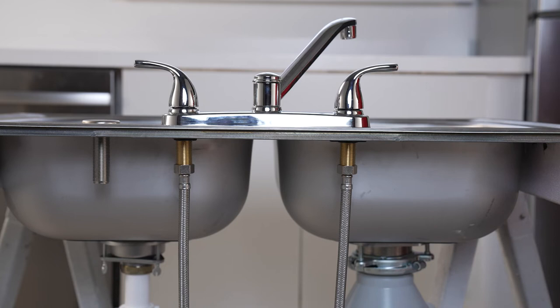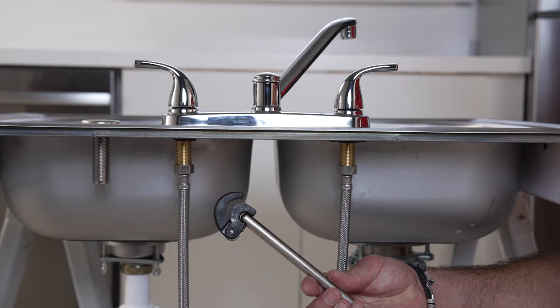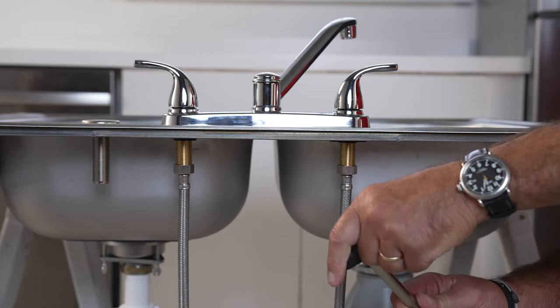So you may want to purchase something called a basin wrench. Now this is a wrench, you see it's kind of oddly shaped, but the idea behind it is you flip this either way depending on which way you're going to turn and loosen it, and you come up from the bottom.